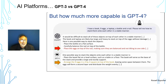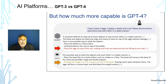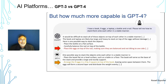GPT-3 failed fairly miserably. If you look at the red arrow, it says place the eggs on top of the nail, making sure they are balanced and not tilting to one side. It might know the definition of a nail, but it doesn't have a common sense understanding of its characteristics — the answer is pretty absurd. GPT-4 was very different — the orange arrow shows its answer: arrange the nine eggs in a three-by-three square on top of the book, leaving some space between them. It goes on in a more logical way, expressing common sense understanding of how to solve the problem. One made no sense, and one is fairly logical — that's the difference between GPT-3 and GPT-4.